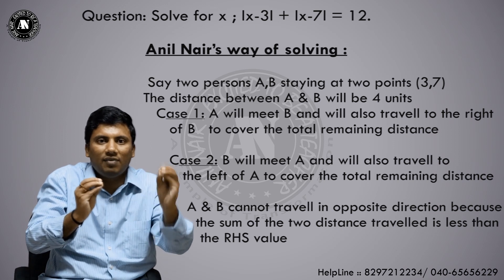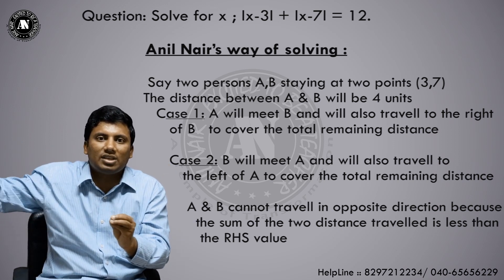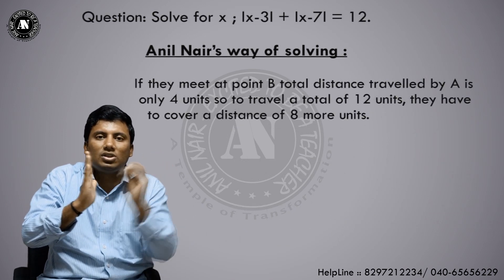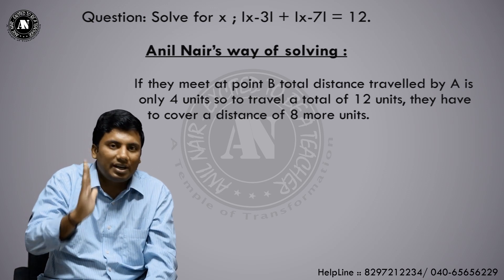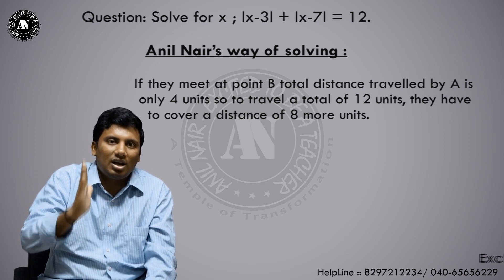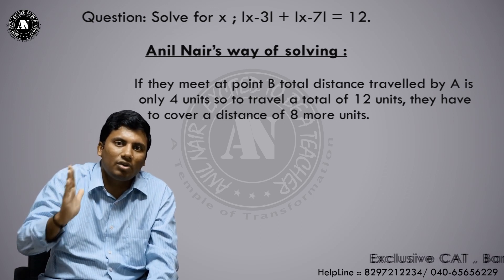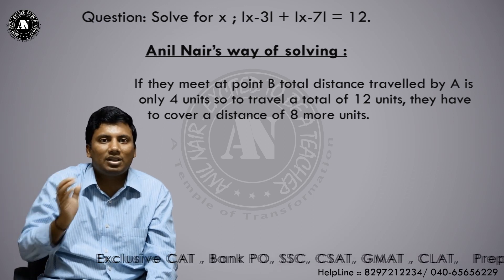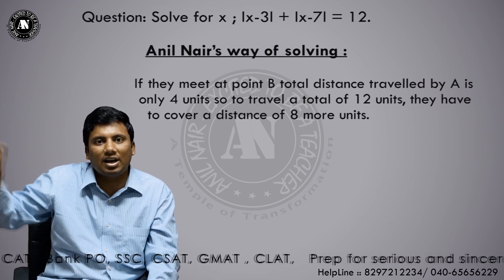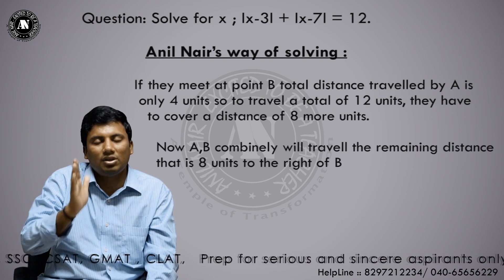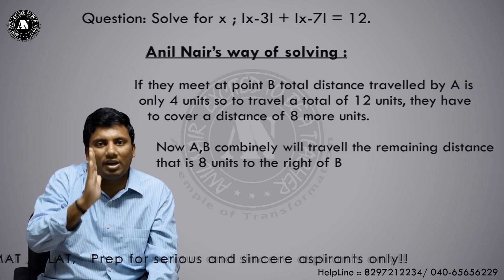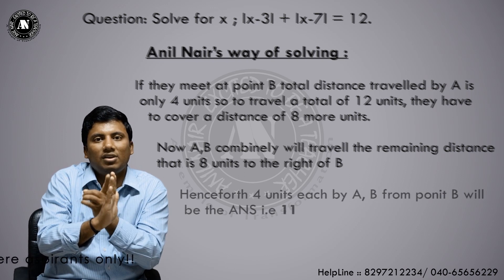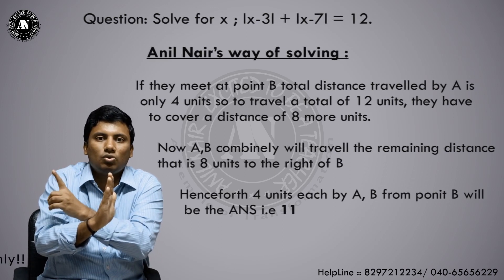Case 1: A comes to B, then both go to the right side of B. Between 3 and 7, A travels to B — that is 4 units already travelled. Out of 12 units, 4 are done, so 8 units remain. Those 8 units are travelled by 2 people together. So the answer is 7 + 8/2 = 7 + 4 = 11.